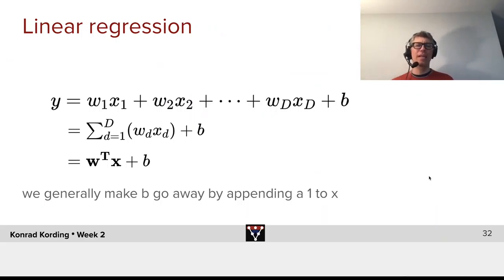Let's talk a little bit about linear regression. What do we have? y is the sum of w1x1 plus w2x2 and so on and so forth. And at the end, we have a bias. This, of course, we can write as sum over d is 1 to big D of wdxd plus b. Alternatively, we can just write this as vectors w transpose x plus b.